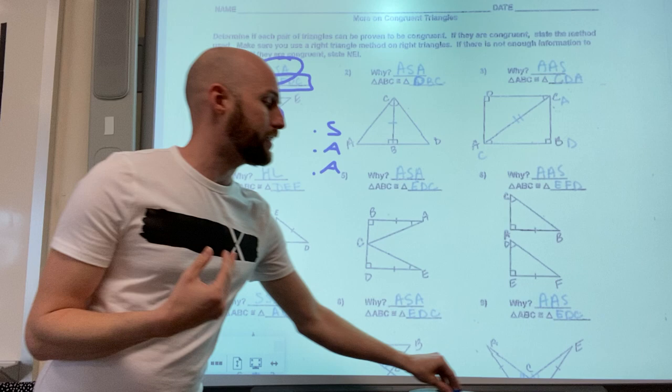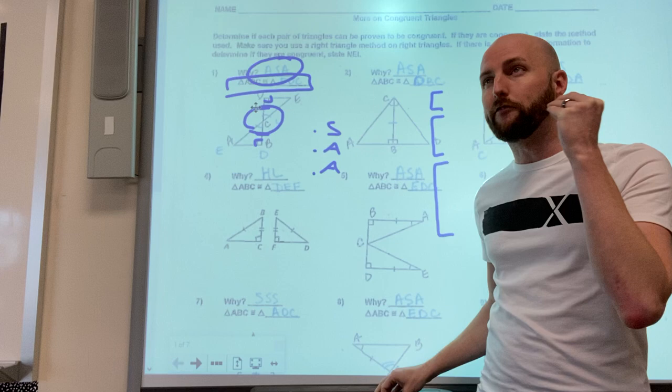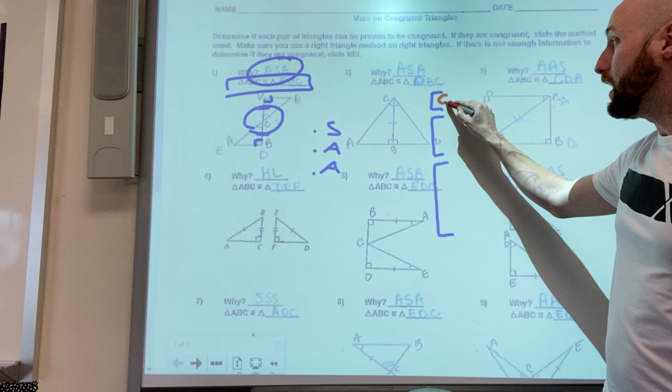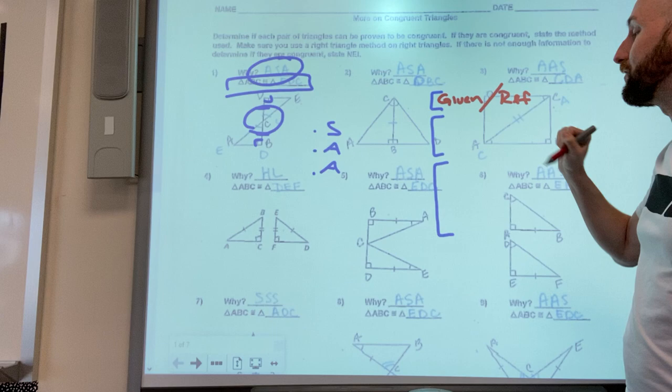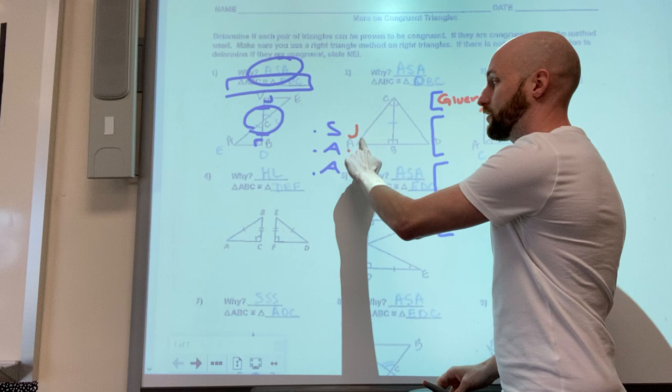Most proof steps come in what I call a one-block, a two-block, or a three-block. Things that are a one-block are either flat-out given to you, or it's like a reflexive side that I can see - I can say they share this side, it's the same for both of them, why? Reflexive. Those are one-block things - one line of code to correctly say it's an angle or a side.